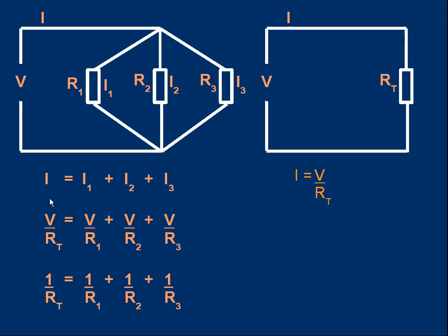Using Kirchhoff's first law, the current into the junction equals the current coming out: I = I1 + I2 + I3. Substituting I = V/RT on the left, and I1 = V/R1, I2 = V/R2, I3 = V/R3 on the right, we get V/RT = V/R1 + V/R2 + V/R3. We can cancel the V on top of each term, which leaves us with the final result: 1/RT = 1/R1 + 1/R2 + 1/R3.